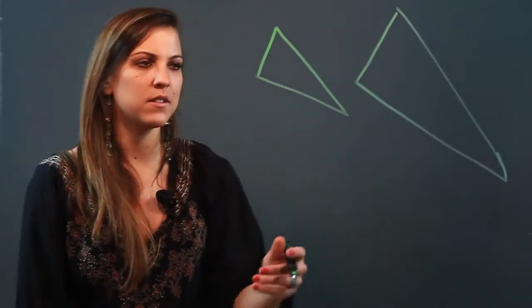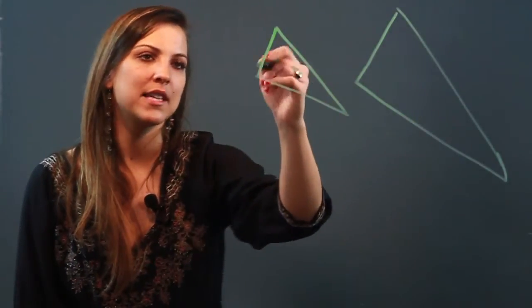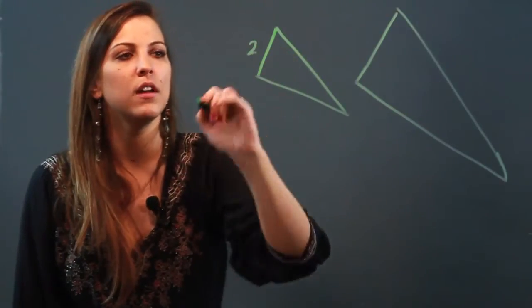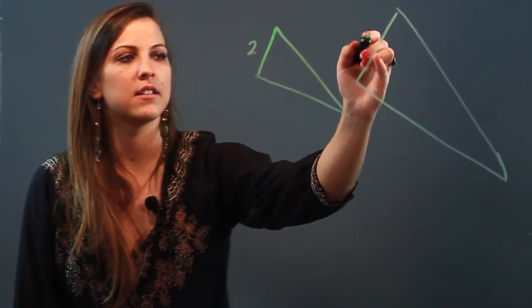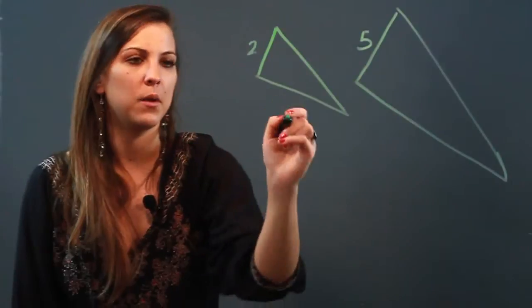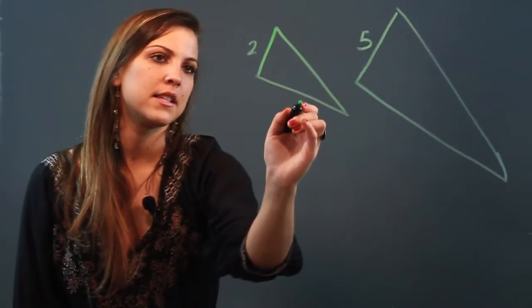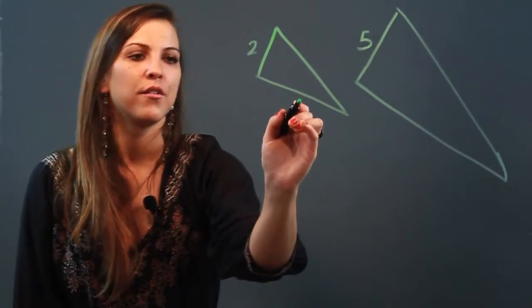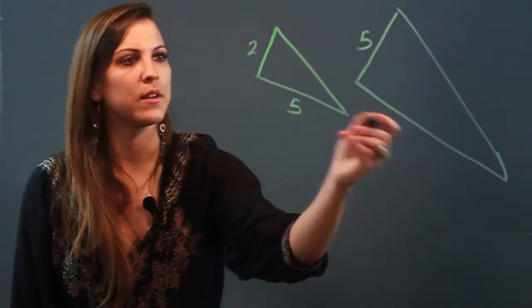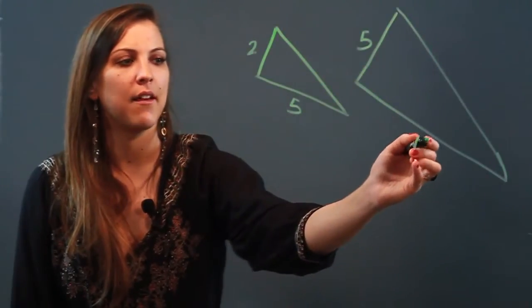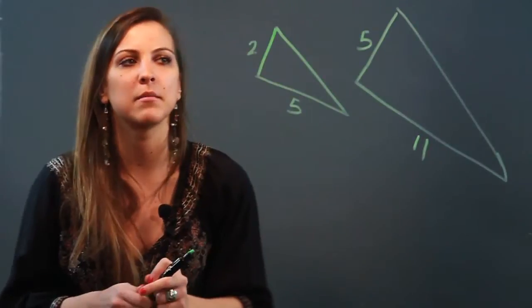So I'm going to give you some values. I'm going to say that this length is 2 and this length right here is 5, and we will make this length 5 and this length is going to be 11. These are not drawn to scale but an estimation.